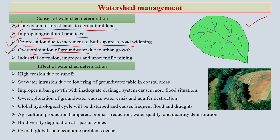Over exploitation of groundwater due to urban growth — huge amounts of water are being pumped out of the ground for daily uses in these areas. Industrial extension and improper, unscientific mining are another very major issue which creates a lot of problems for watershed management.